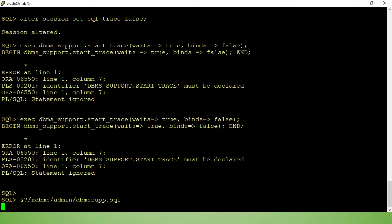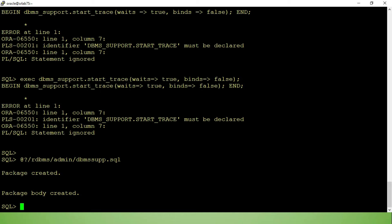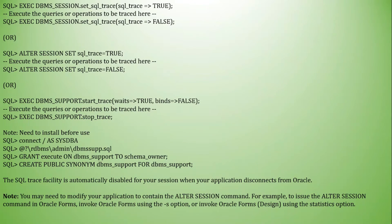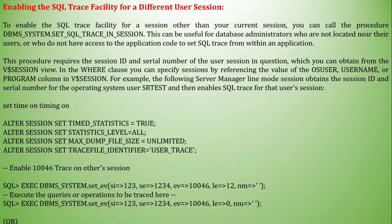Now we can create and execute this code. This facility is automatically disabled for your session when your application disconnects from Oracle. You may need to modify your application to contain the ALTER SESSION command — for example, if you are using Oracle Forms with the STATISTICS option or designing using the statistics option.